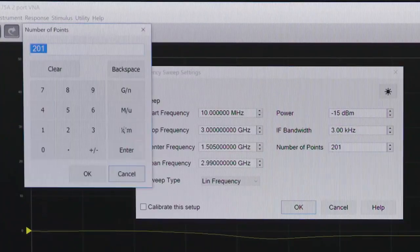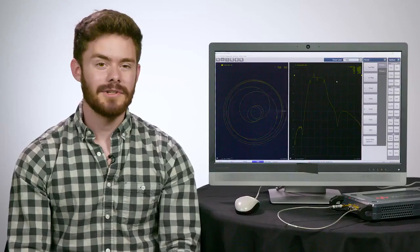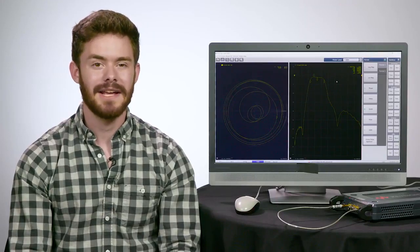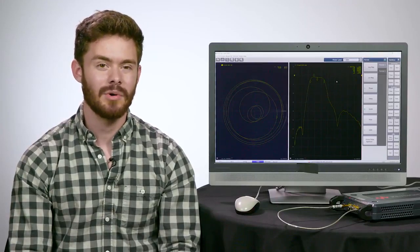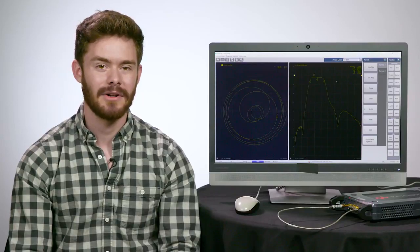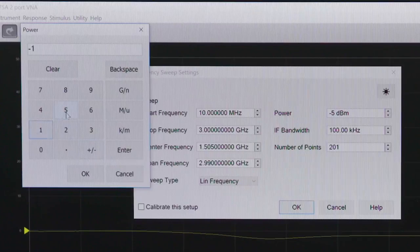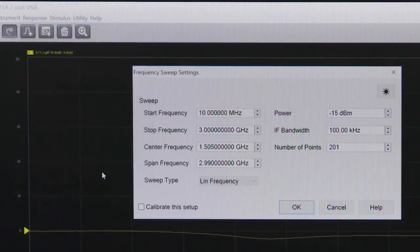It's important to remember here that this new USB VNA's source power must be set correctly in order to avoid damage or compression inside the E-cal module. The power for this should be set to minus 15 dBm for the calibration operation. Now that we're done with that quick setup, let's get calibrating!